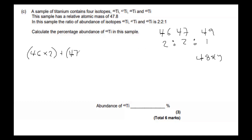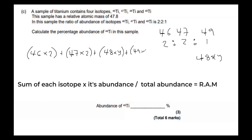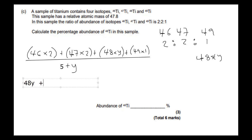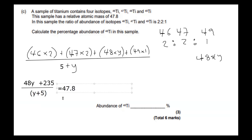Y is the abundance of isotope 48. We set out the equation: 46 times 2, plus 47 times 2, plus 48 times Y, plus 49 times 1 — all divided by the total abundance. Adding 2, 2, and 1 gives 5, plus Y for the unknown abundance of 48. So total abundance is 5 plus Y. We simplify the numerator: 46×2 + 47×2 + 49×1 = 235. So the equation becomes (48Y + 235) divided by (Y + 5) = 47.8.